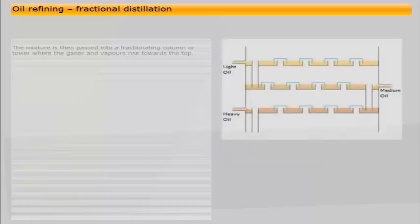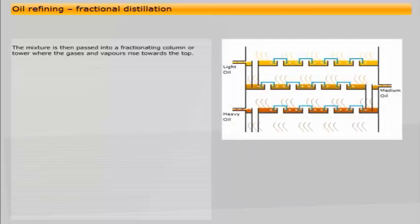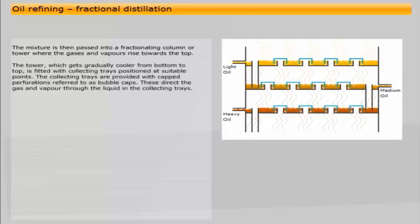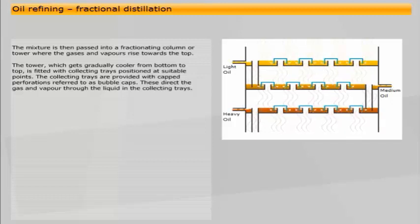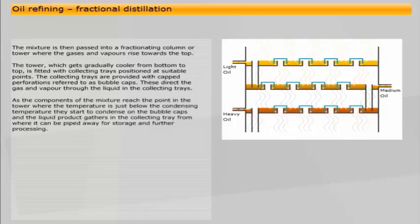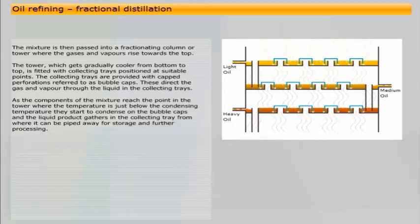The mixture is then passed into a fractionating column or tower where the gases and vapours rise towards the top. The tower, which gets gradually cooler from bottom to top, is fitted with collecting trays positioned at suitable points. The collecting trays are provided with capped perforations, referred to as bubble caps. These direct the gas and vapour through the liquid in the collecting trays. As the components of the mixture reach the point in the tower where the temperature is just below the condensing temperature, they start to condense on the bubble caps and the liquid product gathers in the collecting tray, from where it can be piped away for storage and further processing.